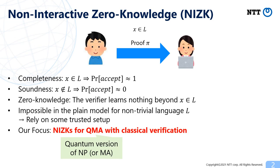Non-interactive zero-knowledge is a protocol to prove validity of some statement without revealing anything beyond its validity in a non-interactive way. We require NIZKs to satisfy completeness, soundness, and the zero-knowledge property. It is easy to see that NIZKs for non-trivial languages are impossible in the plain model, so we have to rely on some trusted setup.